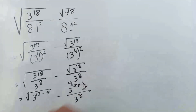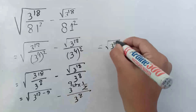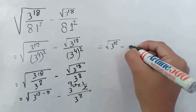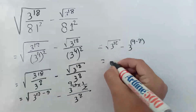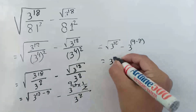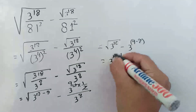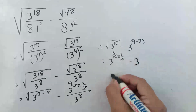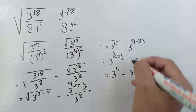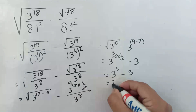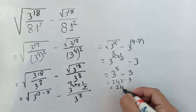Now we can write square root of 3 to the power 10, which equals 3 to the power 10 times 1 by 2, and it comes 3 to the power 5 minus 3. So it comes 3 to the power 5 minus 3, and the final result is 3 to the power 9 by 3 to the power 9, which gives 4 to the power 9 by 3 to the power 9.